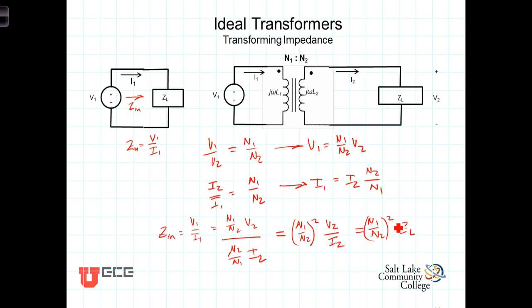So, what this is telling us is that if the source impedance and the load impedance are not matched, for example, in maximum power transfer, we know that you want the magnitude of Z sub L to be the same as the magnitude of the source impedance, we can change the effective impedance that the source sees by inserting this transformer, and the impedance that it then sees is the load impedance multiplied by the turns ratio squared.